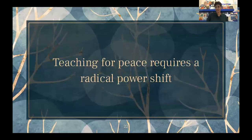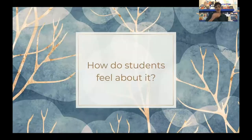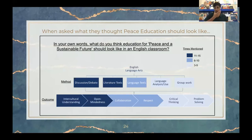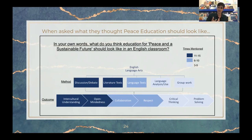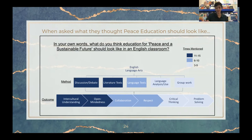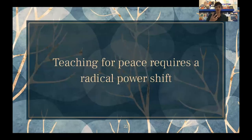It's interesting to think about what students thought. I first asked them, before the intervention started: what do you think education for peace and a sustainable future should look like in an English classroom? The graphic shows the ways in which they think teaching for peace should be taught. What's interesting is that intercultural understanding and open-mindedness are mentioned far more times than critical thinking and problem solving. Discussion and debate — which is more about the sharing of ideas — featured far more than group work, which is about the construction of ideas. Talking to students about this, they seem to see themselves much more as passive actors — entities with potential rather than entities with power — which goes back to what I was saying about teaching for peace requiring that radical power shift.